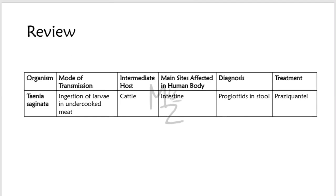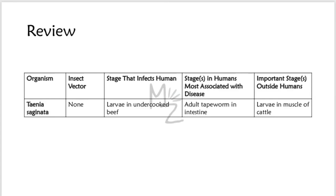Let's review everything quickly. The organism is Taenia saginata. Its mode of transmission is by eating undercooked meat containing larvae. The intermediate host is cattle and the definitive host is human beings. The main site affected in the human body is the intestine. Diagnosis involves finding gravid proglottids in stool. Treatment of choice is praziquantel. It has no insect vector. The stage that infects humans is the larvae in undercooked beef. The stage most associated with disease is the adult tapeworm in the intestine. The important stage outside humans is the larvae in the muscles of cattle.